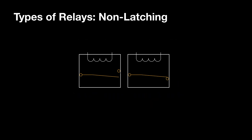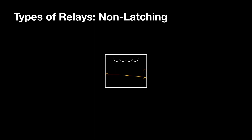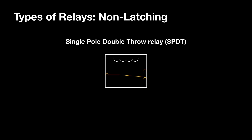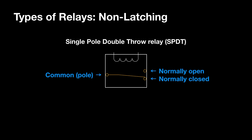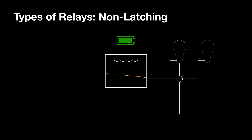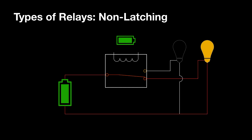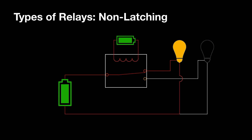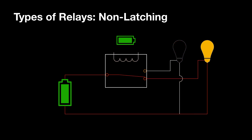Combining these two variants results in a relay that has two contacts for the armature to throw itself against. This is a single-pole, double-throw relay. The pole is now called the common terminal because no matter what state the relay is in, the armature is always connected to it. When we put this relay into a circuit with no power to the coil, we see that one of the bulbs lights up. If the coil is then energized, the bulb connected to the normally closed contact turns off, and the other one turns on.